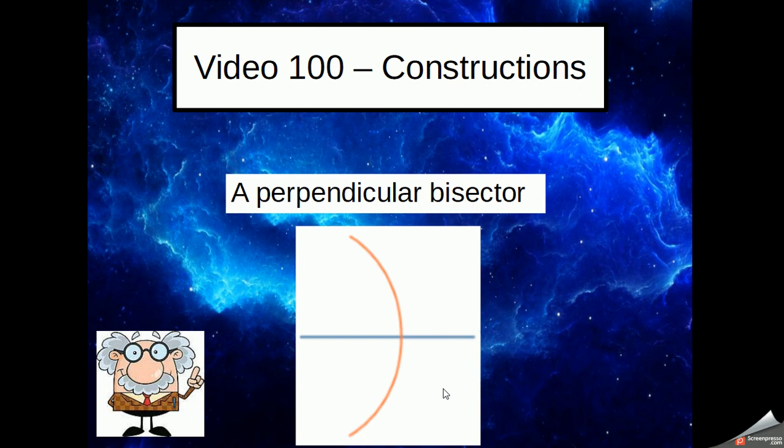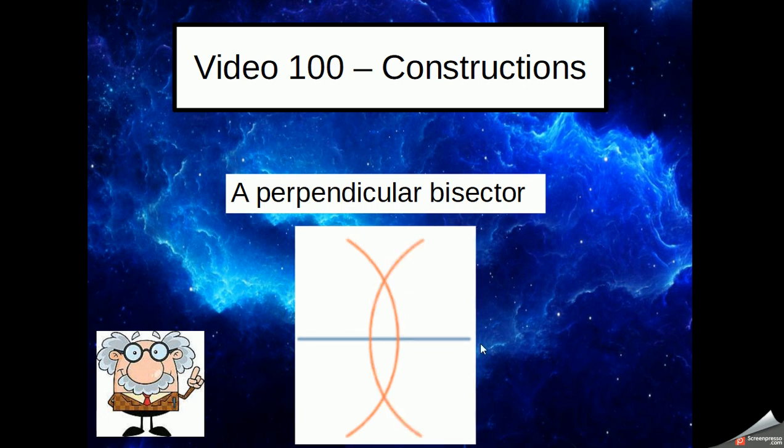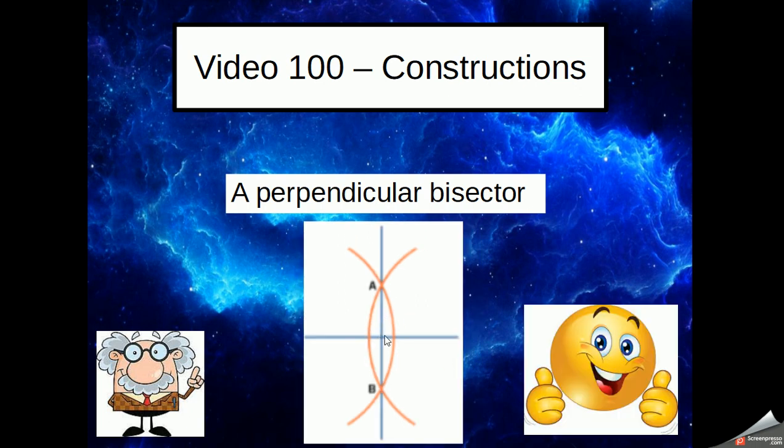Keeping the width of the compass the same, you've got to be careful there because the compass can be nudged. You put the metal point on the other end and create another arc. And what you should find, because those two have got the same distance, they will cut through each other at two points. Now, if we join those two points up, we now have a perpendicular bisector of that line.